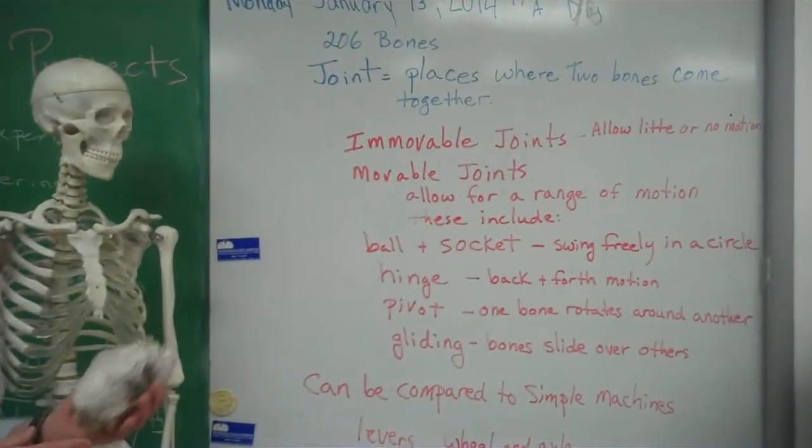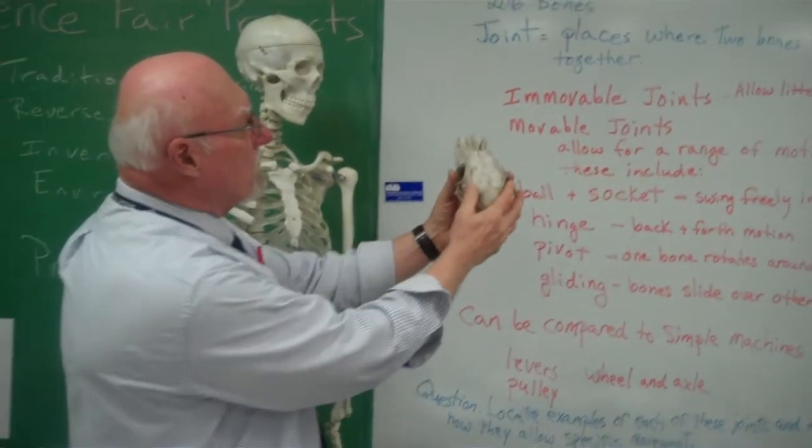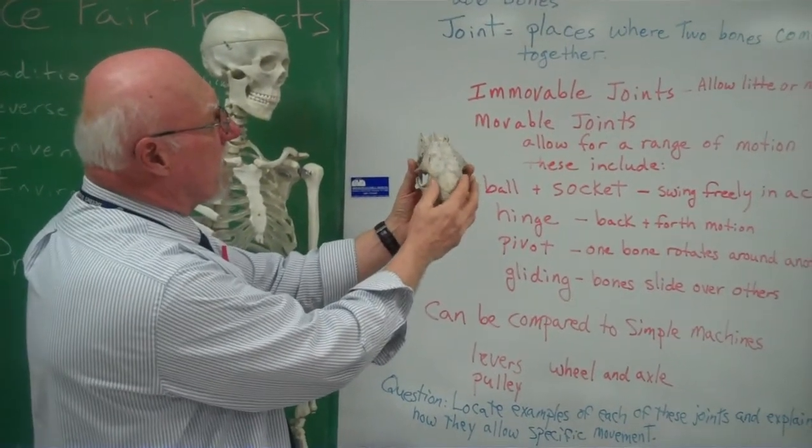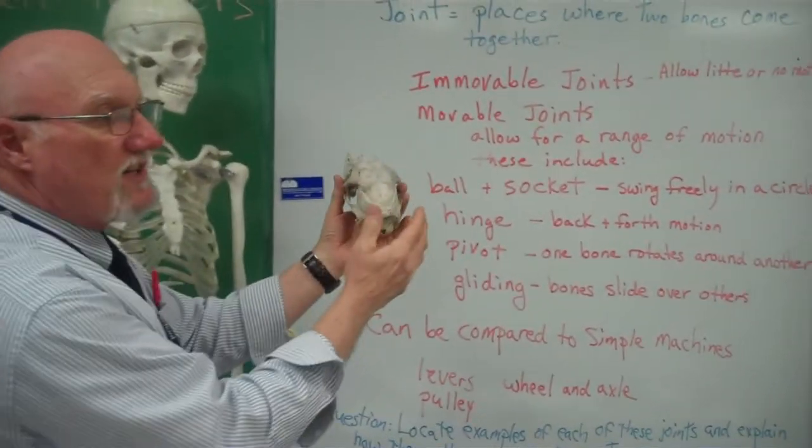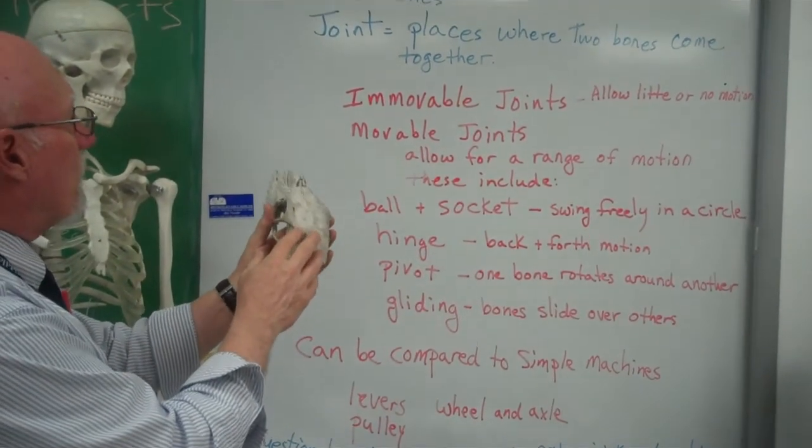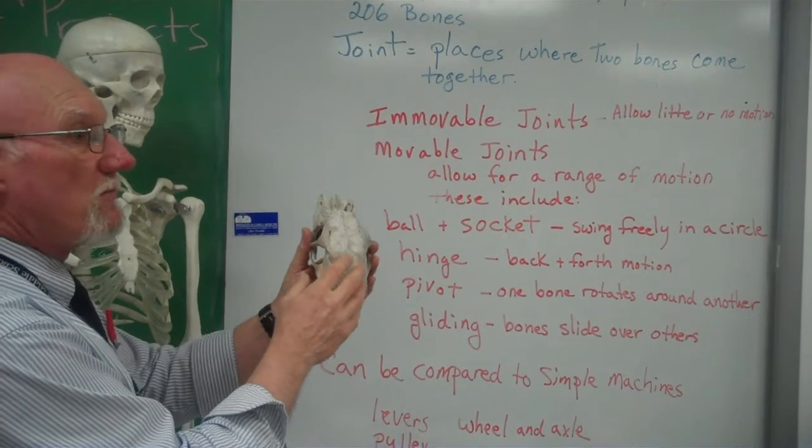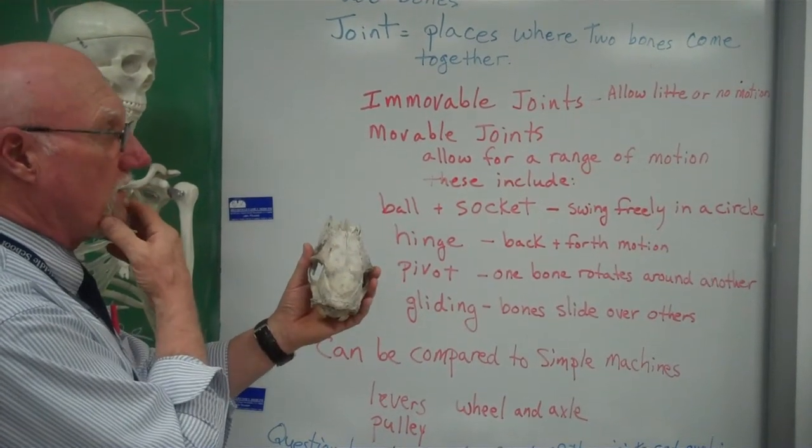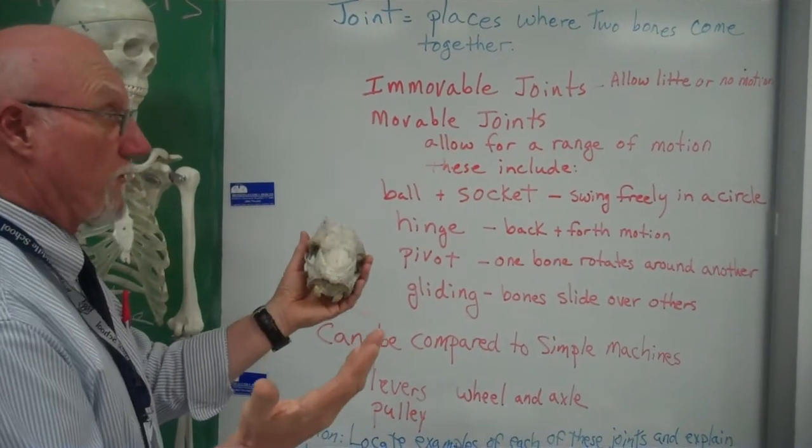So an example of an immovable joint would be like the bones that come together and form our skull. We've got 20 some bones in our skull alone. And many of them do not move. But some bone joints in our body move a lot, especially in our skull, like our jaw, for instance.